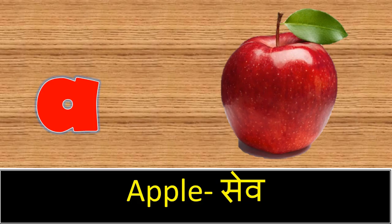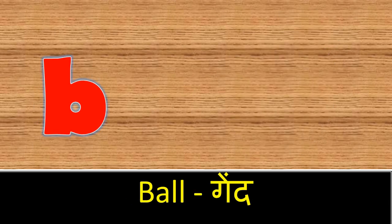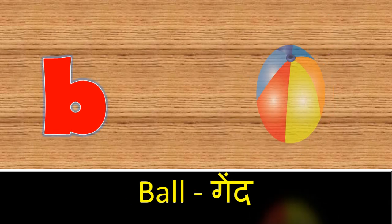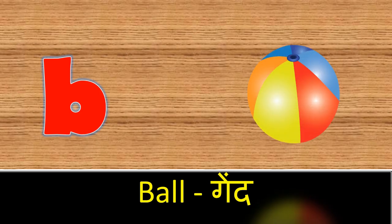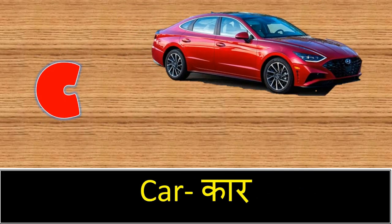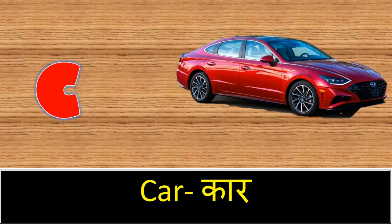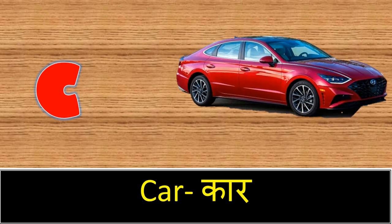A. A for apple. Apple means save. B. B for ball. Ball means gain. C. C for car. Car means car.